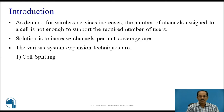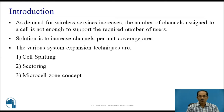Cell splitting increases the number of base stations deployed and allows an orderly growth of the cellular system. Second is sectoring, which uses directional antennas to further control interference and frequency reuse. Third is the micro-cell zone concept, a relatively new technique that distributes the coverage of a cell and extends the cell boundary to hard-to-reach places.